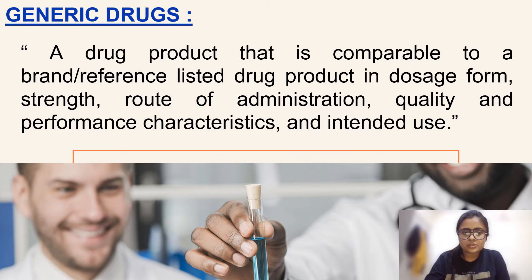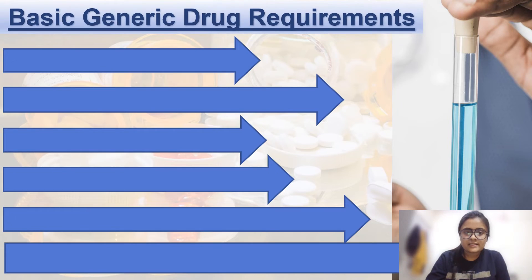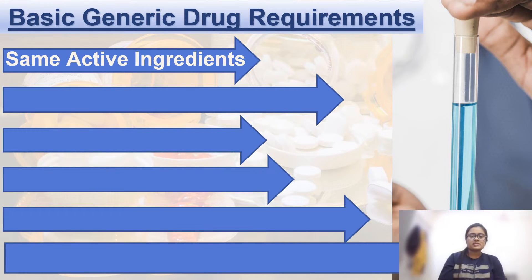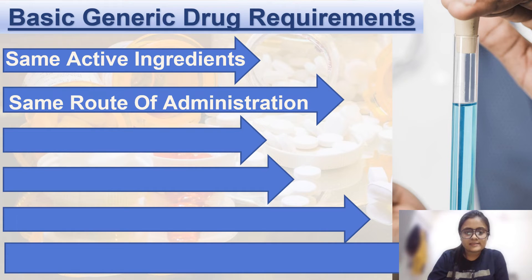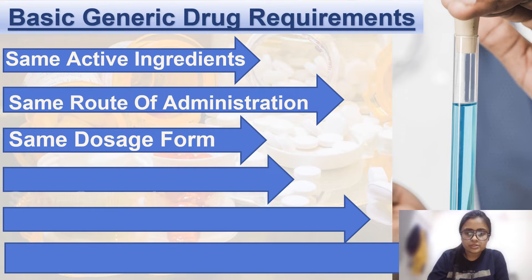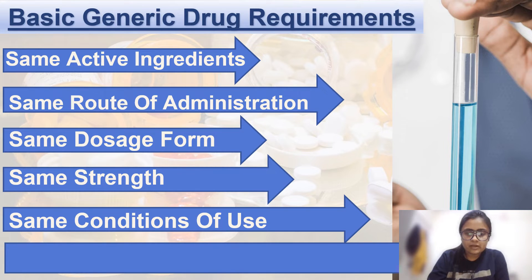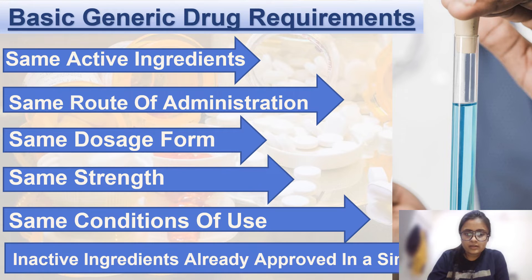Generic drugs are products comparable to a brand reference listed drug product in dosage form, strength, route of administration, quality, performance, and indicated for the same intended use. Basic generic drug requirements include: same active ingredients, same route of administration, same dosage form, same strength, same conditions of use, and inactive ingredients already approved in a similar NDA.